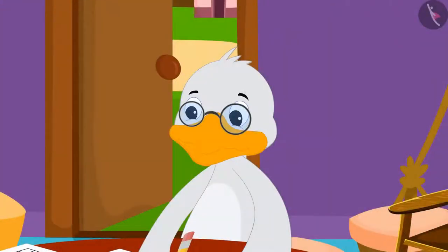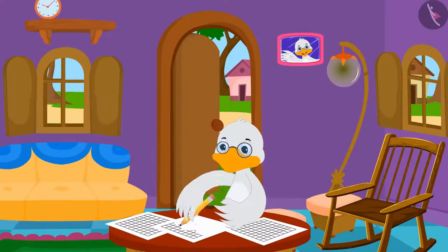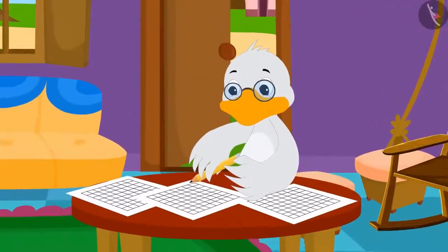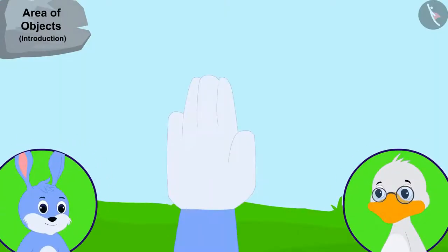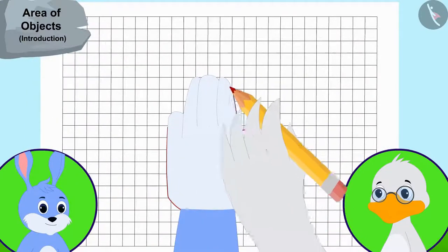Now, uncle made grid papers using some other papers too by making equal squares of one centimeter long edges. Uncle first took the impression of Bunny's hand on a grid paper like this.